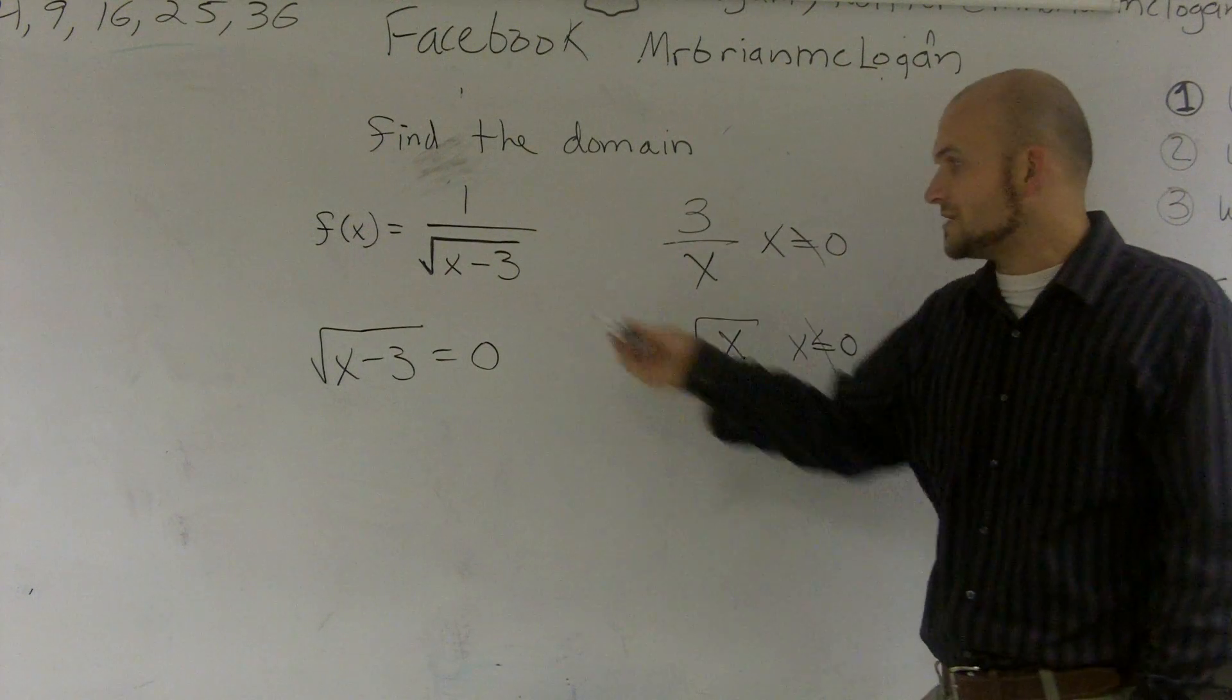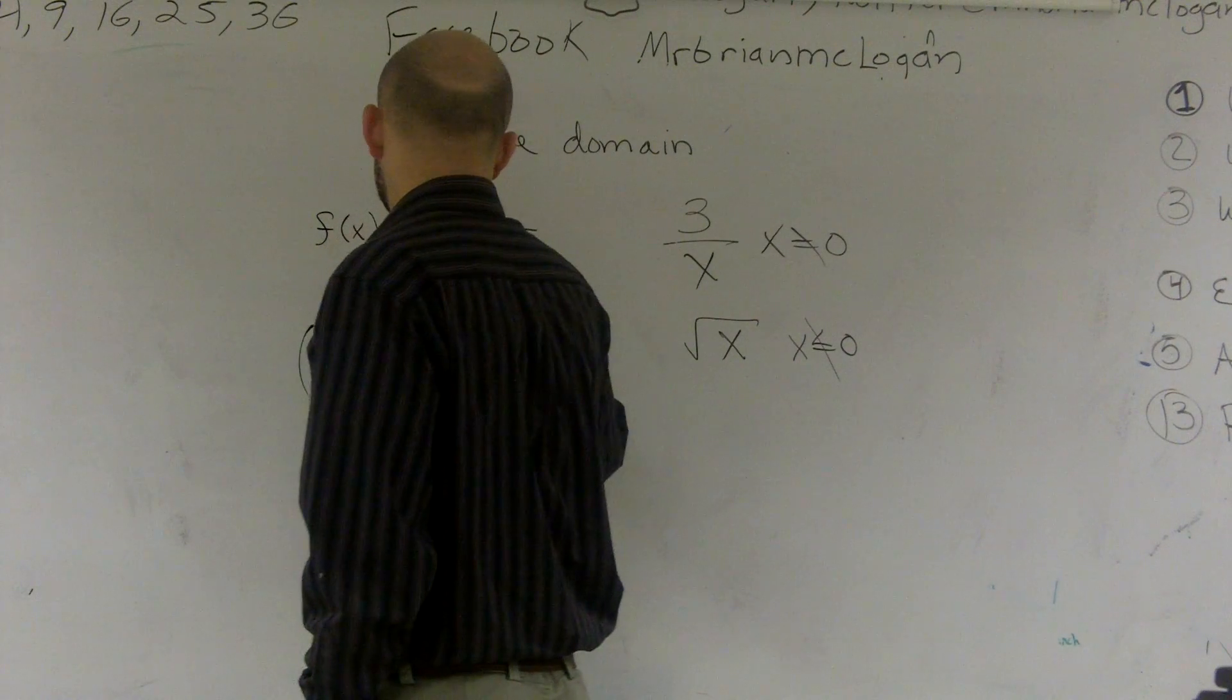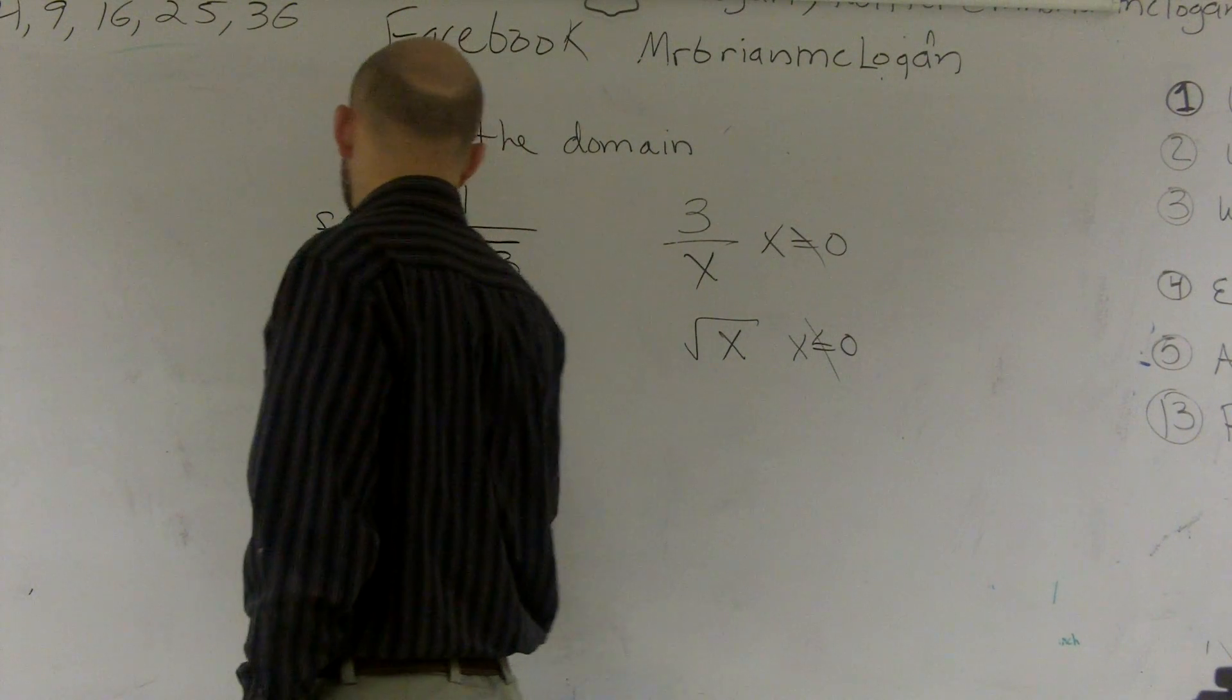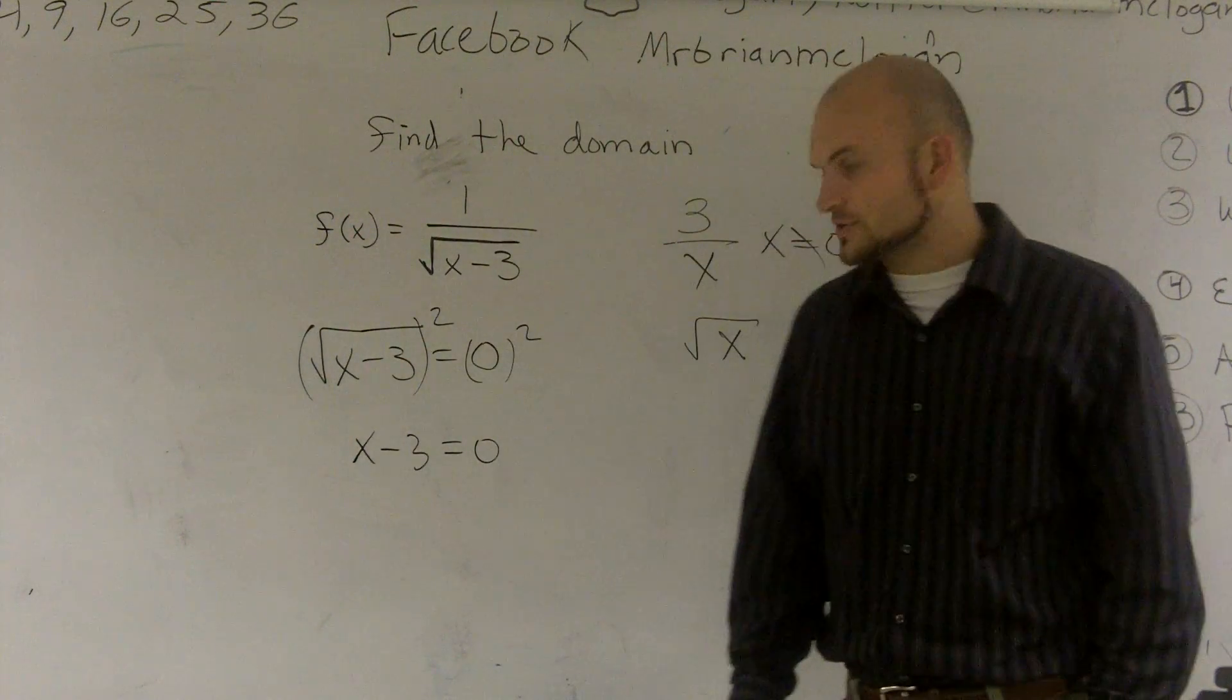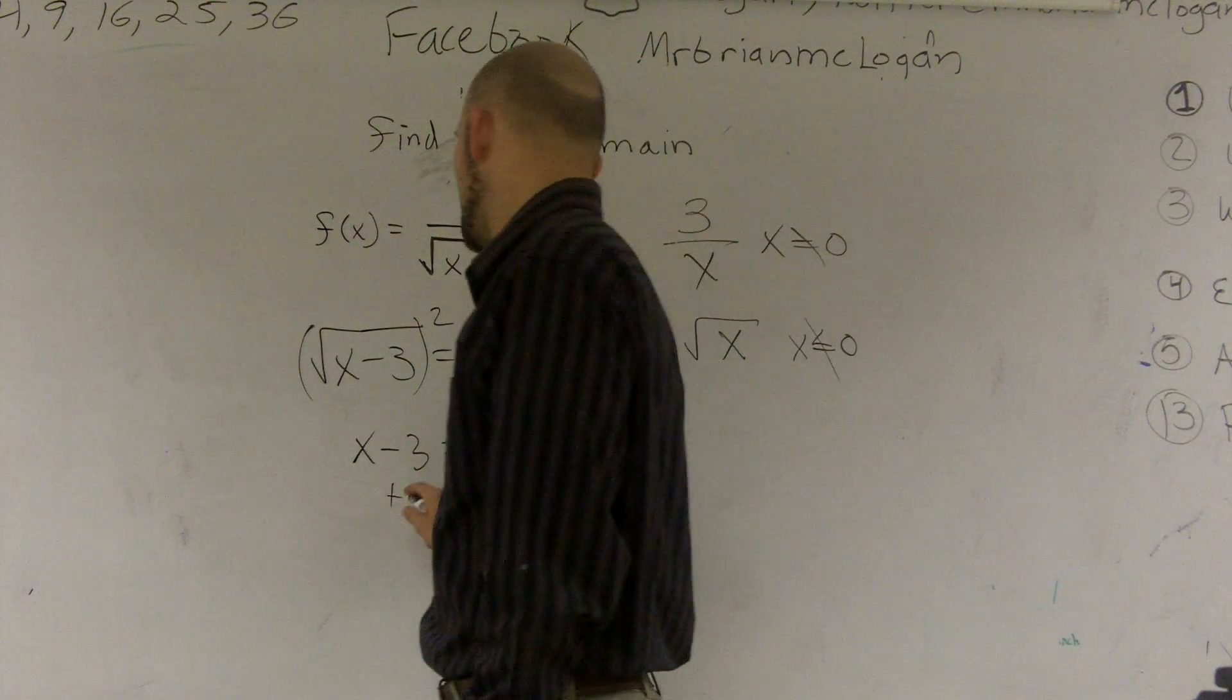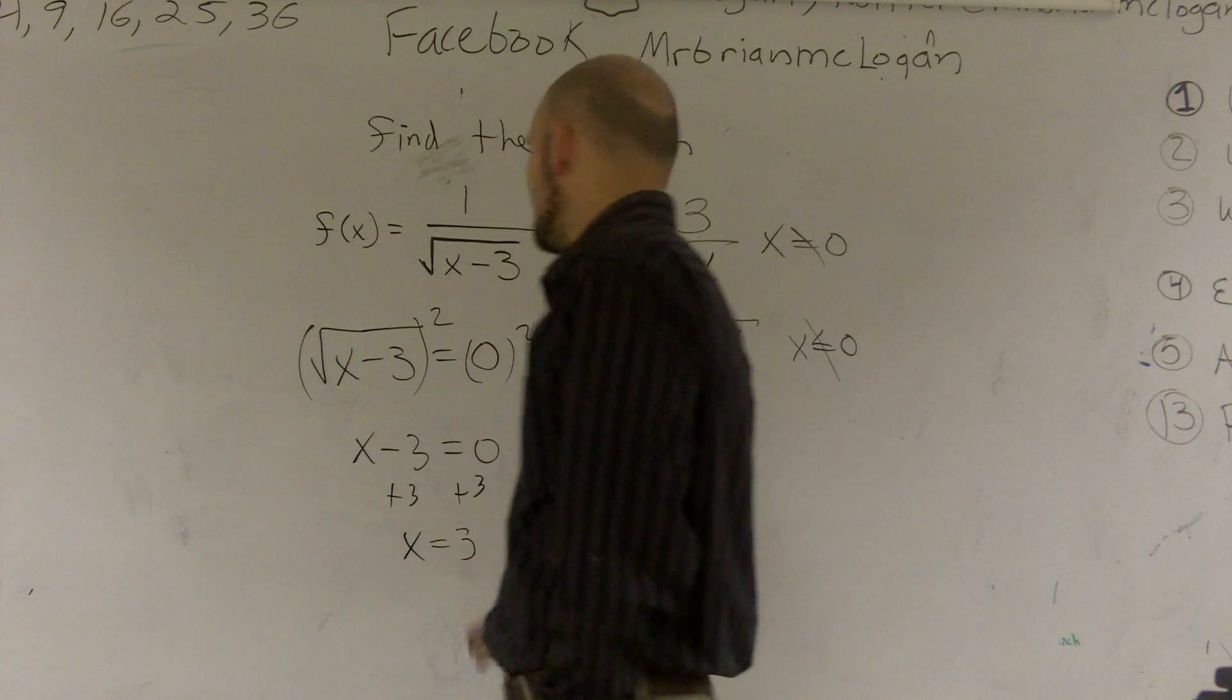So let's figure out which values of x make this equal to 0. To solve for this, square it. So x minus 3 equals 0. And then I just add 3.